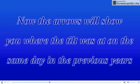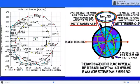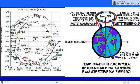And it continues its outward wobble. Now the arrows will show you where the tilt was on the same day in the previous year. So pay close attention because this is actual data showing that the earth's tilt is becoming more extreme.